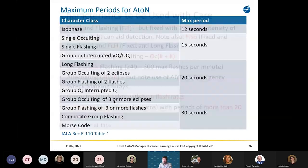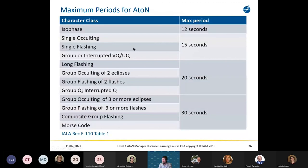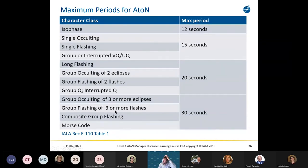There are maximum periods as outlined in the recommendation. For example, a group flash of three — which may apply to a lighthouse — you might have flash 3 over 30 seconds, and of course that will depend on the rotational period of the optic.